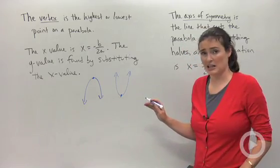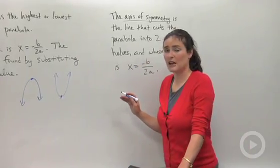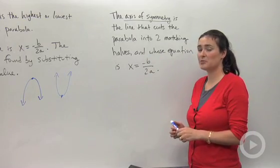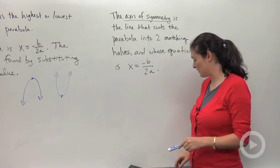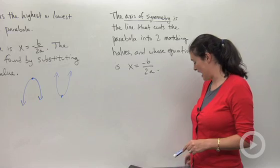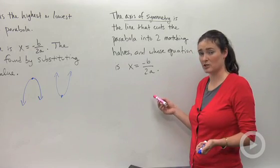Let me back up a little and talk about the axis of symmetry. The axis of symmetry is the line that cuts the parabola into two matching halves, and whose equation is x equals negative b over 2a.